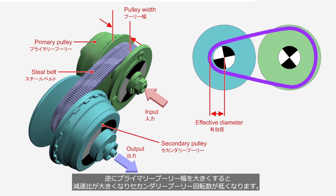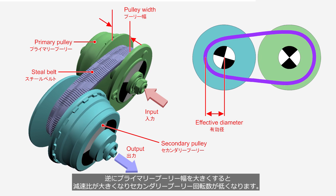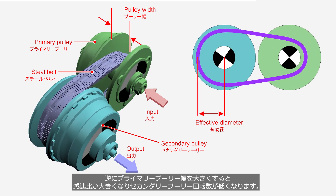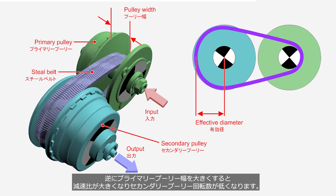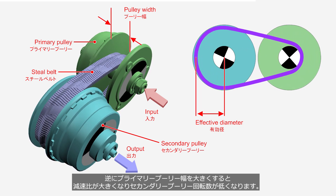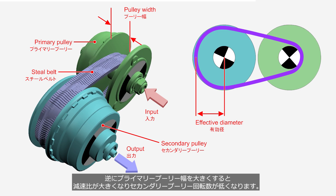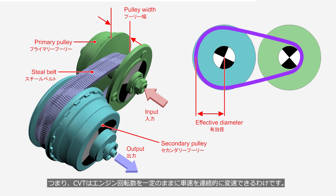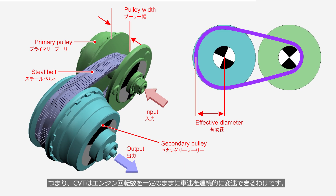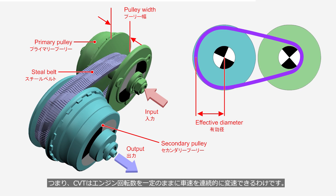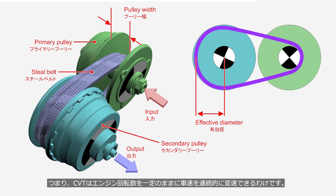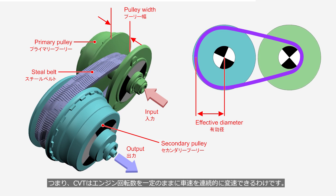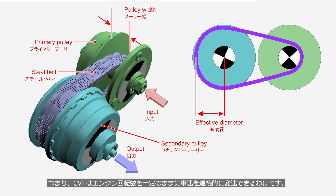Conversely, increasing the primary pulley width results in a higher reduction ratio, causing a decrease in the rotational speed of the secondary pulley. In other words, a CVT is capable of continuously altering the vehicle speed while keeping the engine rotational speed constant.